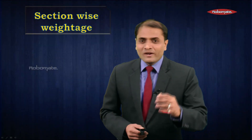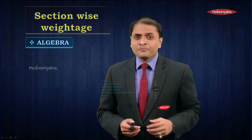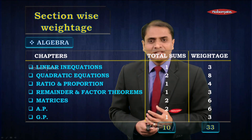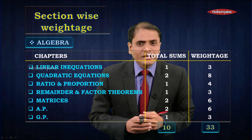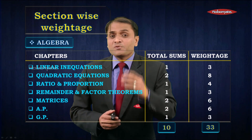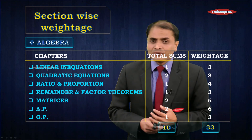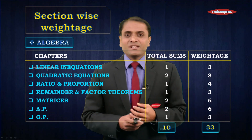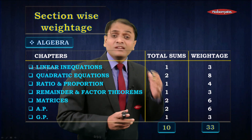Welcome back. Let's continue with the section-wise weightage. In this particular module we're going to see the weightage of the section of algebra. These are the seven chapters in the section of algebra: linear inequations, quadratic equations — both numerical questions and word problems — ratio and proportion, remainder and factor theorem, matrices, and finally AP and GP. You can expect around 10 questions from this section weighing 33 marks — a very huge weightage.